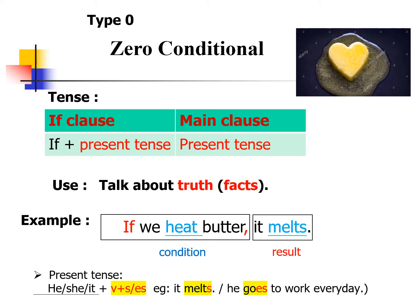Hello, everyone. In today's lesson, we will focus on doing exercises for type zero or zero conditional sentences. So before we start doing the exercises, I would like to have a quick reminder for the important things that we need to pay attention to when we are doing the exercises.